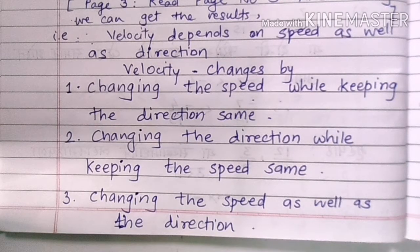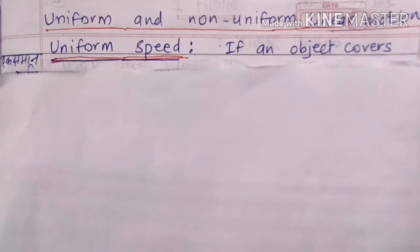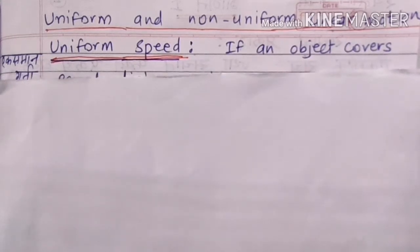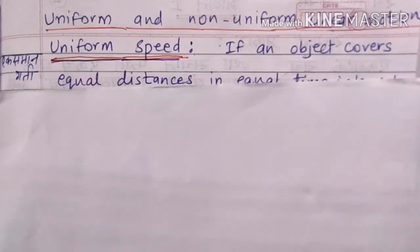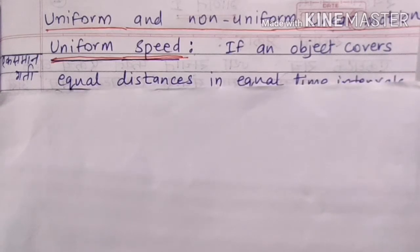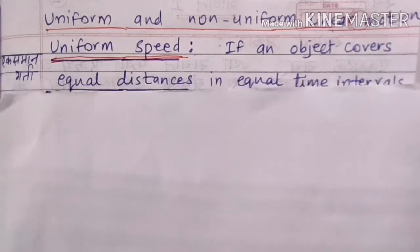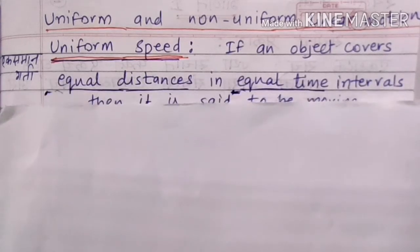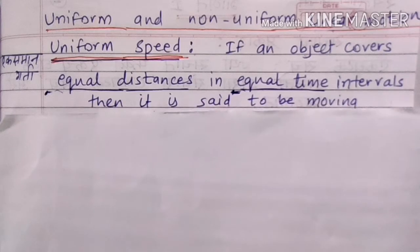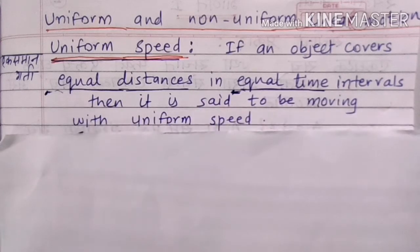The next topic is uniform and non-uniform linear motion. What is meant by uniform speed? If an object covers equal distances in equal time intervals, then it is said to be moving with uniform speed.